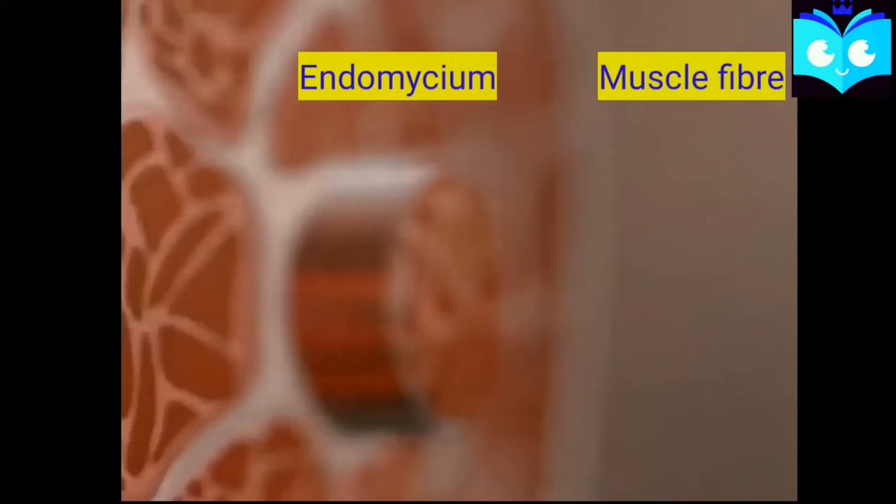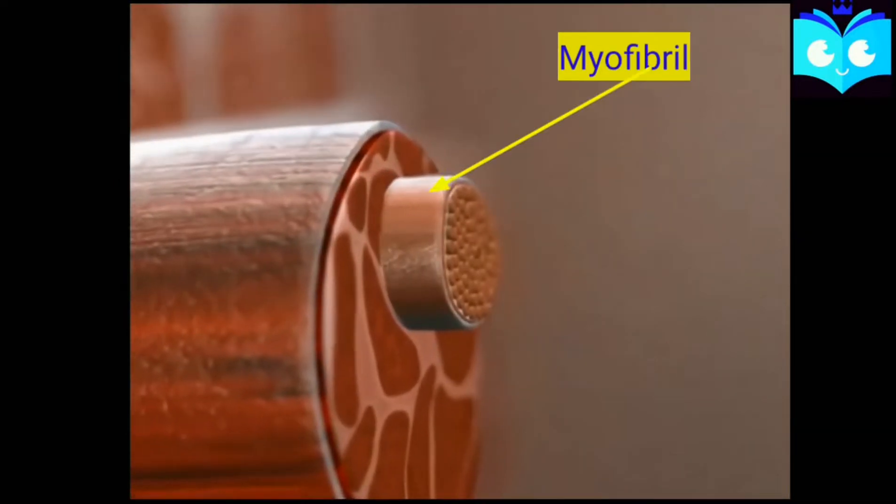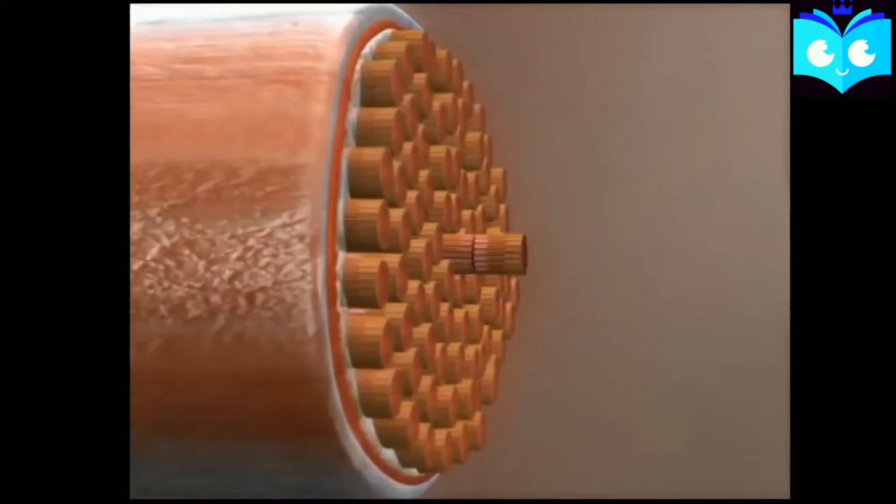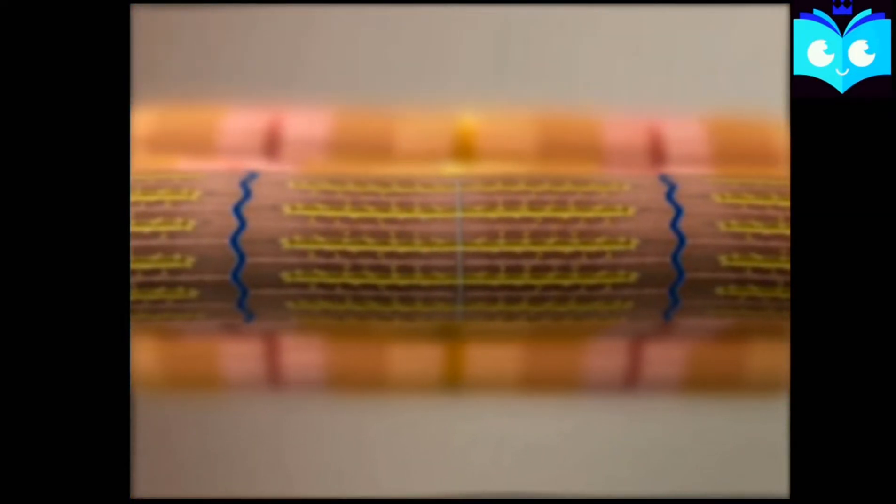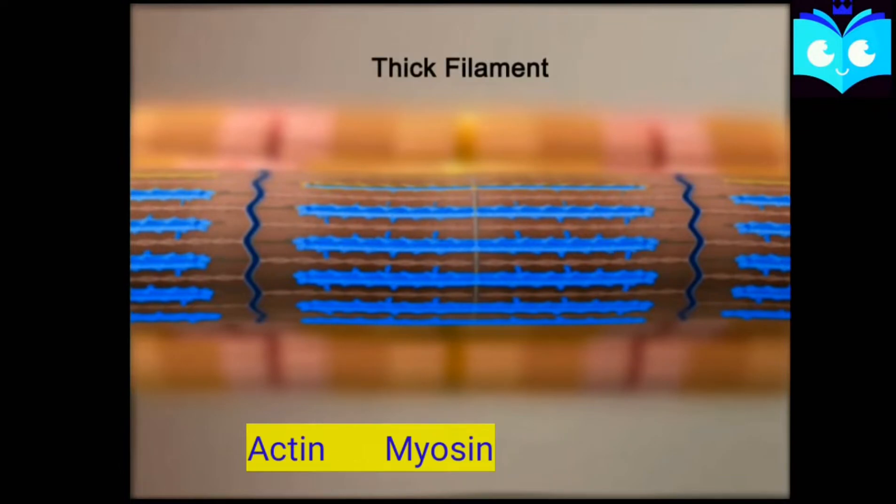Muscle fiber also contains many myofibrils, which contain a large number of sarcomeres. These sarcomeres are known as the functional unit of a muscle.